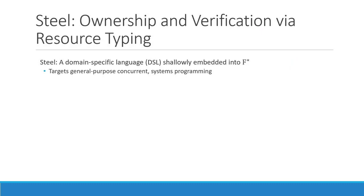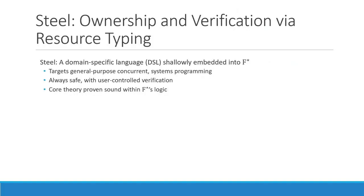So today we are presenting Steel, which aims at providing ownership and verification via resource typing. Steel is a domain-specific language certainly embedded into a type theory-based proof assistant, namely F-Star, and our target with Steel is really general-purpose concurrent systems programming. Steel programs are ensured to be always safe, and on top of that, a user can decide how much they want to verify — from nothing at all, just memory safety, to full-fledged complex security and functional properties.